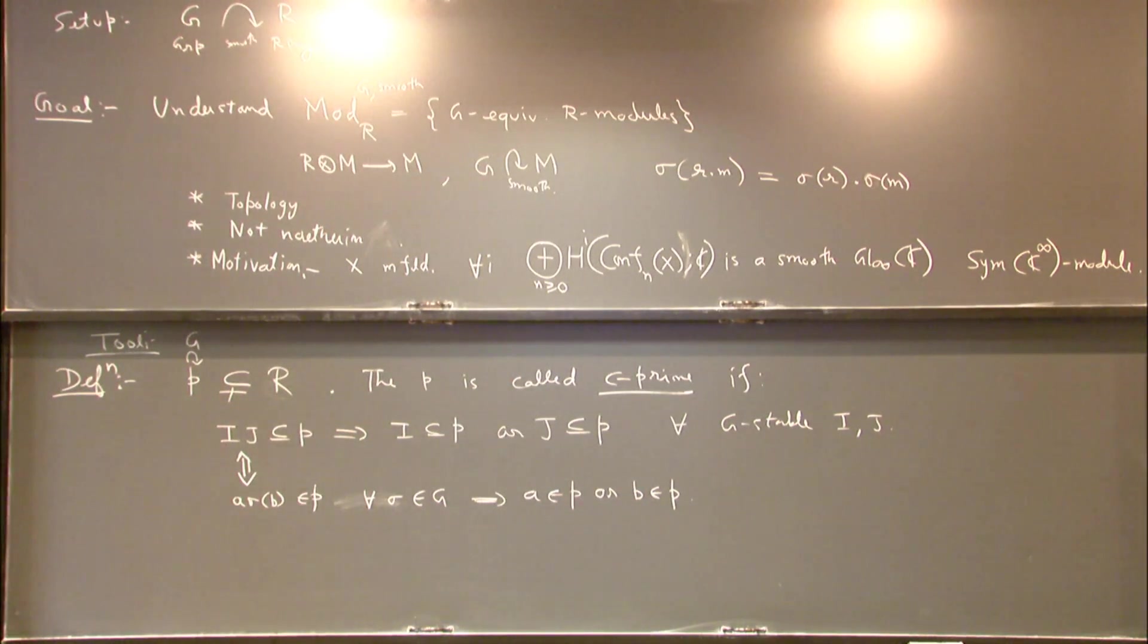So this is slightly different from the usual notion of prime. This is equivalent to saying that A sigma B is in P implies for all sigma implies either A is in P or B is in P. R will be, for most of my applications R will be commutative, right. Right. So this is just like a more fancy version of prime. Right. So let me tell you nice construction, how can we construct these C primes.